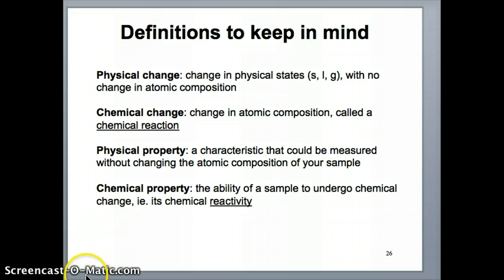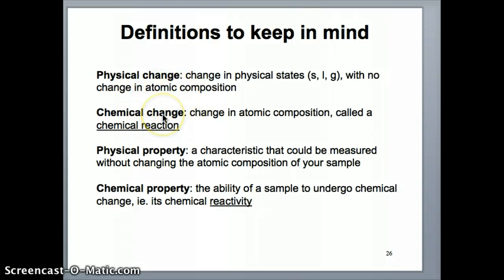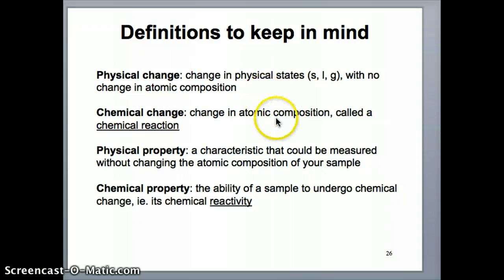Remember earlier, we started by talking about two types of changes that could occur with substances. We talked about physical changes, which is basically referring to changes in physical states — like things going from solid to liquid to gas — but with the same chemical components and atomic composition. A chemical change, on the other hand, would be if you're actually changing the atomic composition. A chemical reaction is really referring to chemical change, so these two phrases mean the same thing: a change in the atomic composition.